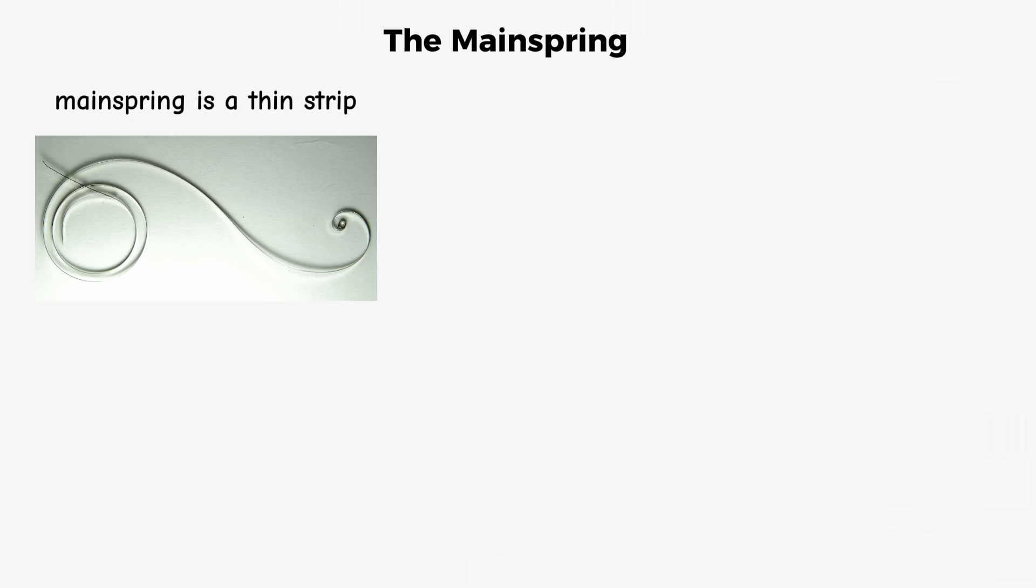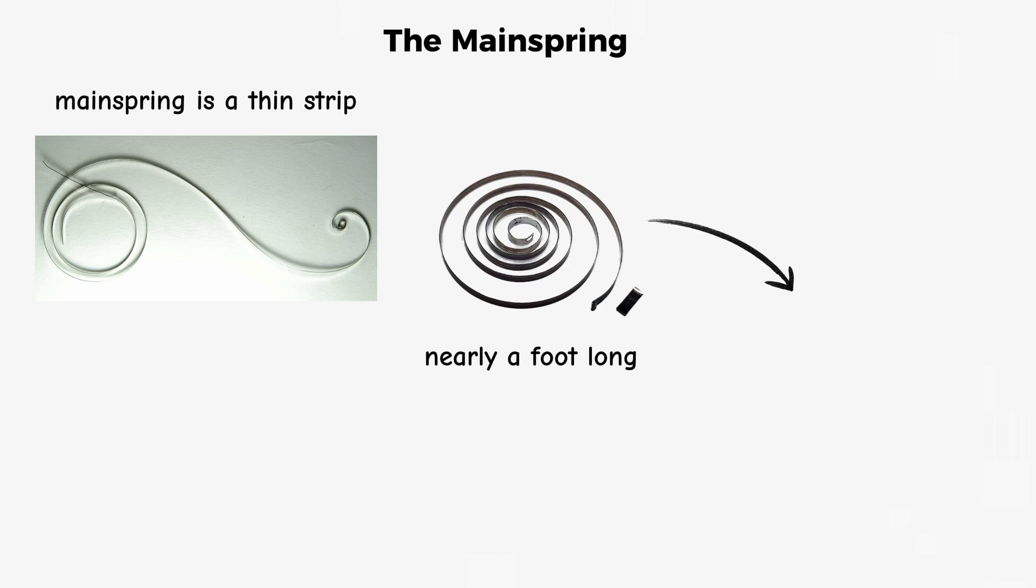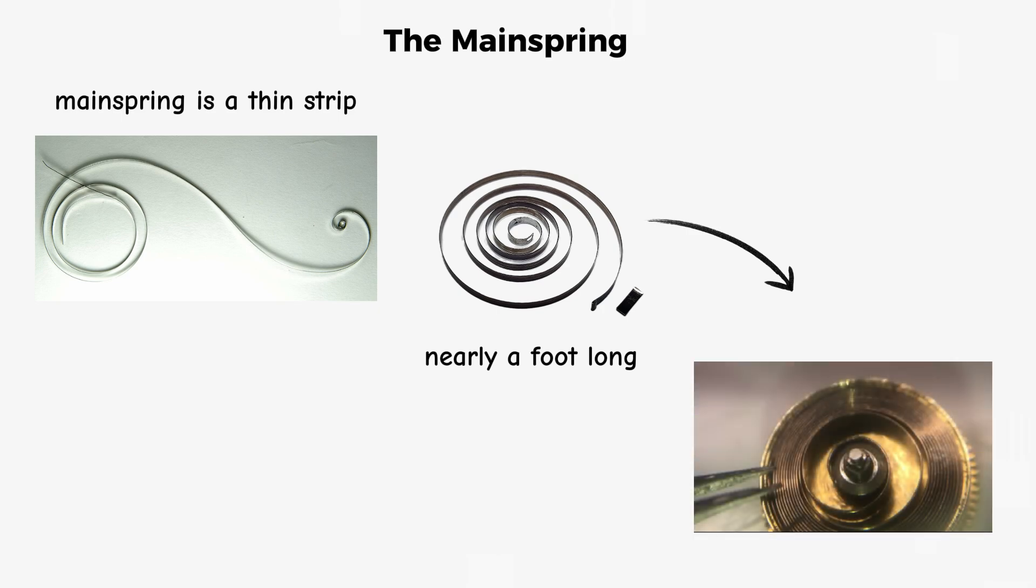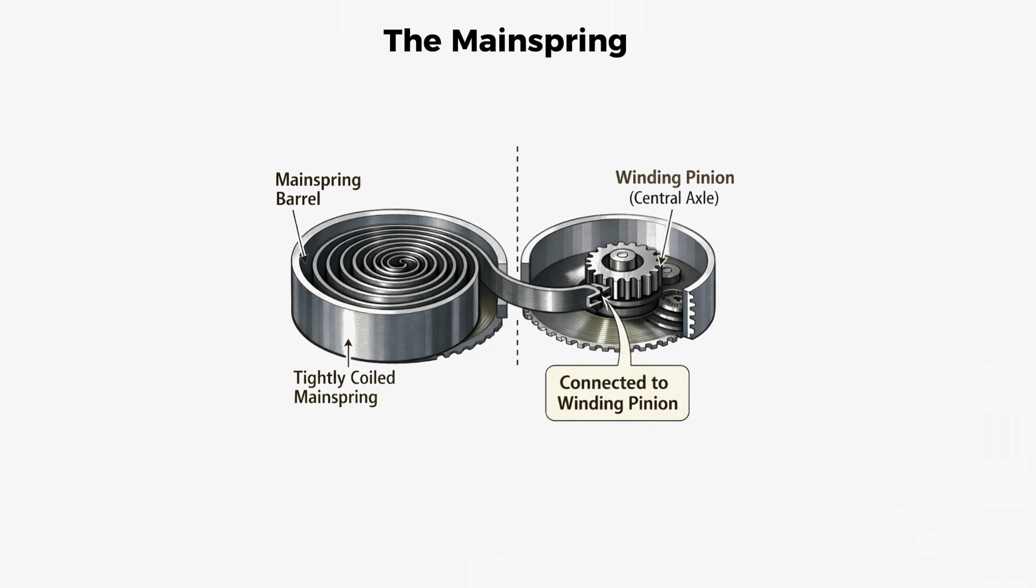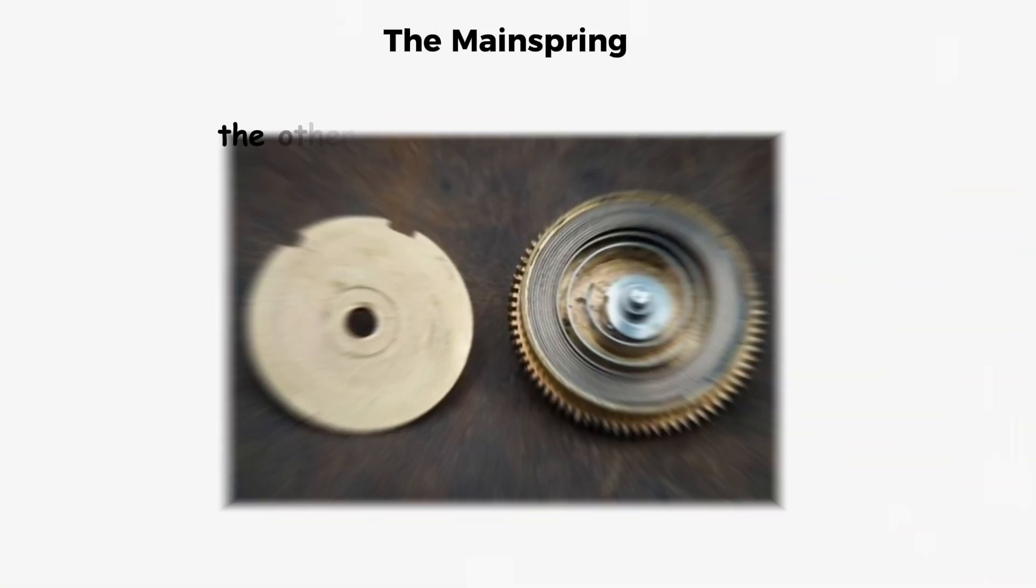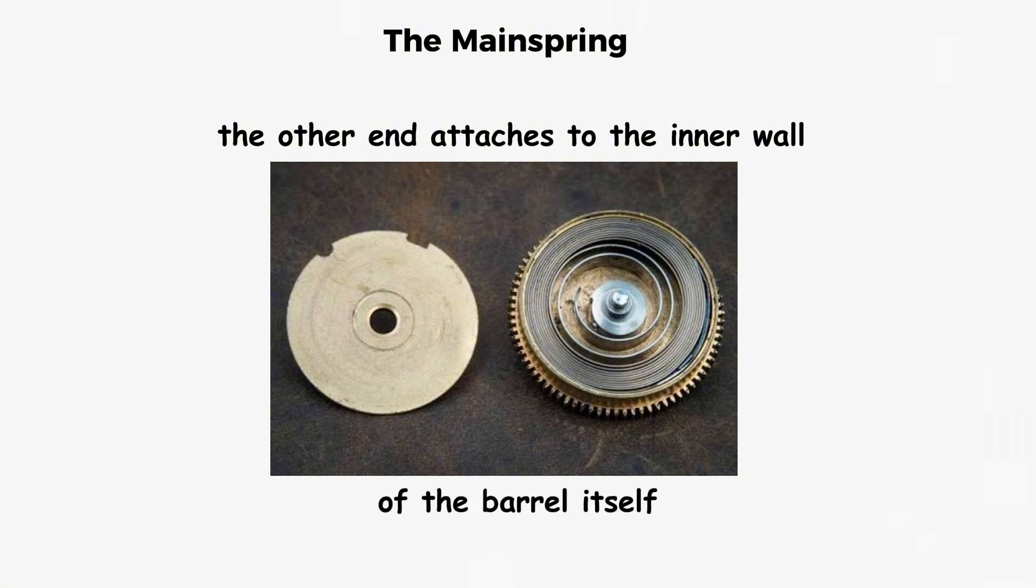The mainspring is a thin strip of hardened steel, nearly a foot long, coiled tightly into a spiral and contained inside a cylindrical housing called the mainspring barrel. One end of the spring connects to a central axle called the winding pinion, and the other end attaches to the inner wall of the barrel itself.